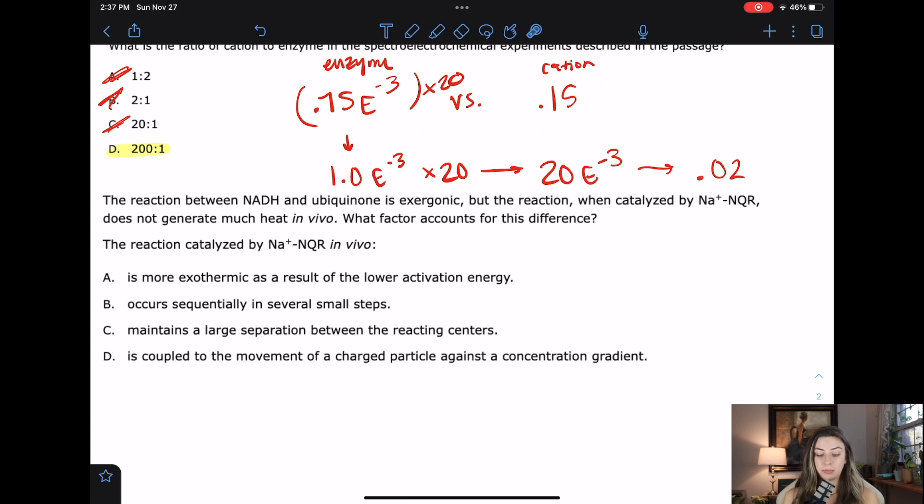Number eight says the reaction between NADH and ubiquinone is exergonic. But the reaction when catalyzed by the enzyme does not generate much heat in vivo. What factor accounts for this difference? So what does exergonic mean? Exergonic means it releases energy, usually like exothermic, spontaneous, like all these words should kind of come to mind when you hear exergonic. Now you guys might be thinking, well, why does this reaction have to be catalyzed if it's spontaneous? And I urge you not to get things mixed up. Catalysis and enzymes are all about rate and kinetics. They have nothing to do with thermodynamics.